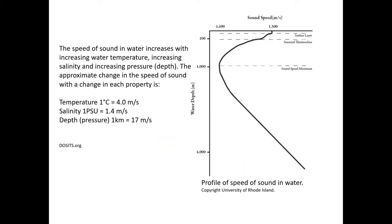The speed of sound depends on a couple of different factors. Speed increases with increasing water temperature, increasing salinity, and increasing pressure or depth. Each one degree Celsius increase raises speed about 4 meters per second; each increase in salinity raises it about 1.4 meters per second; and going deeper increases it about 17 meters per second.